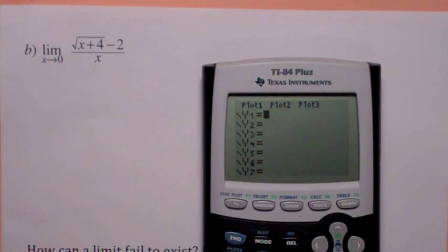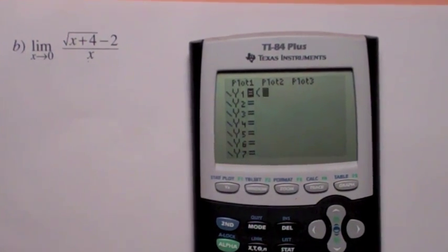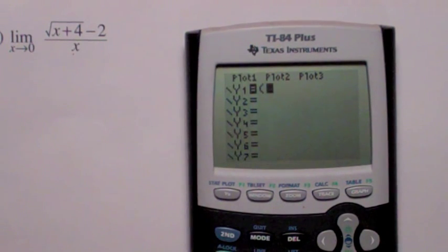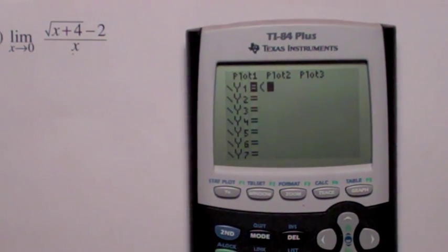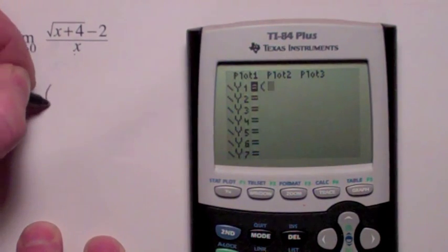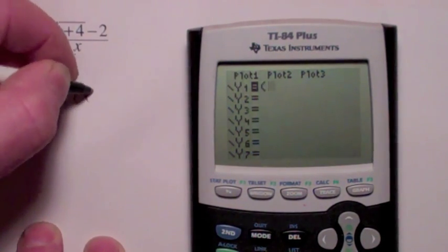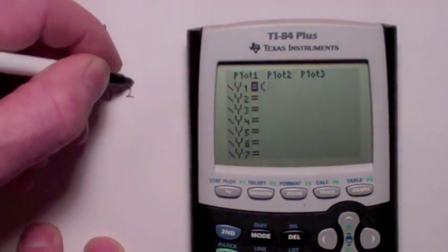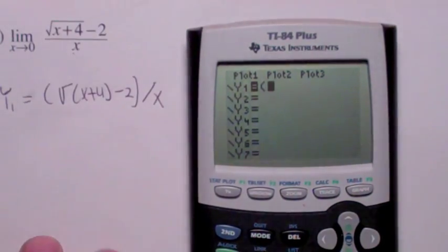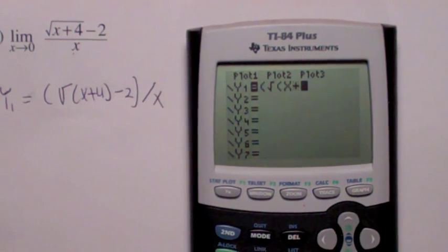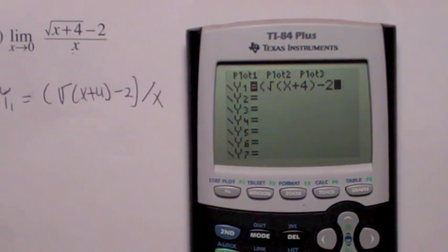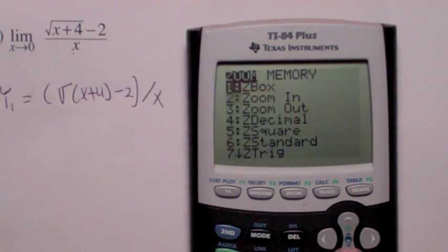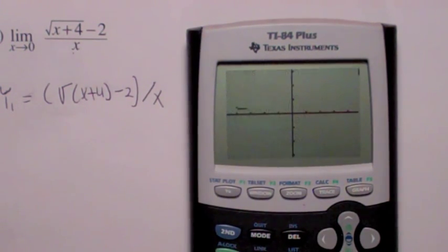Enter the expression of the function. That's kind of a challenge in itself, isn't it? Let's see. The function would be parenthesis, we're going to do it like this, y1 equals parenthesis square root of x plus 4 minus 2 close parenthesis divided by x. That's how we're going to enter it right there. So left parenthesis, square root of x plus 4, close parenthesis, minus 2, close parenthesis on the numerator, divided by x.